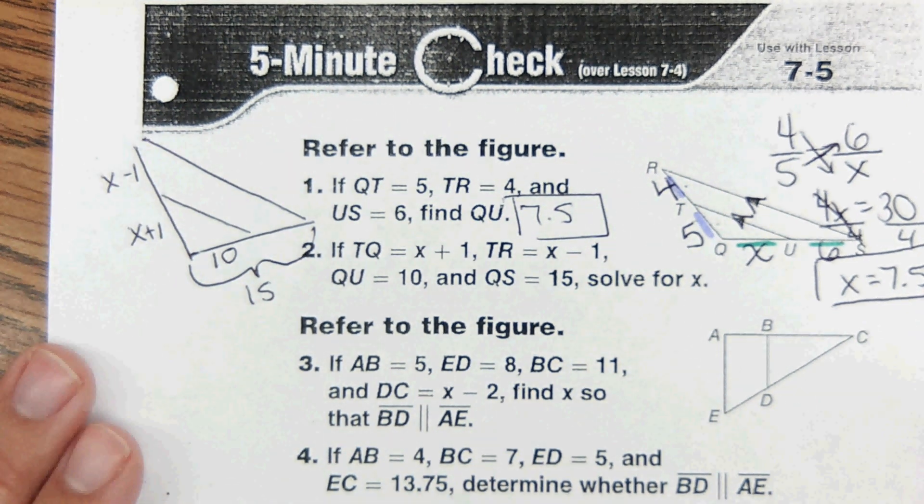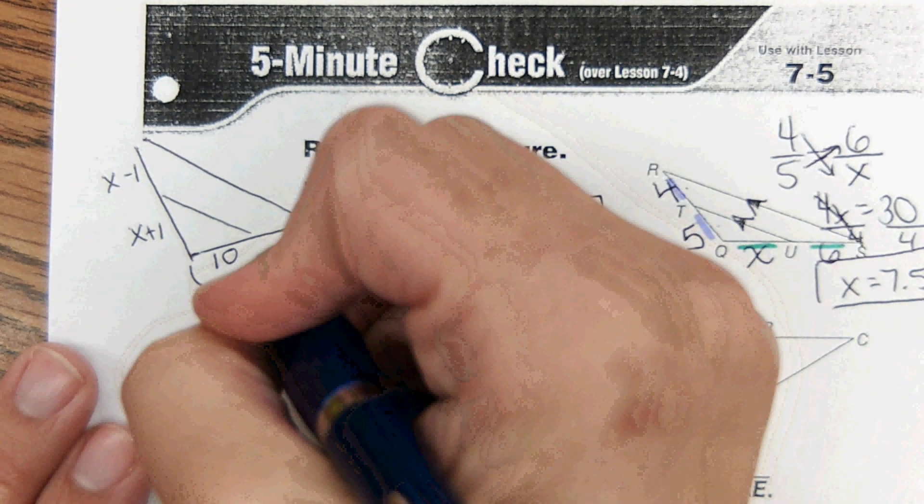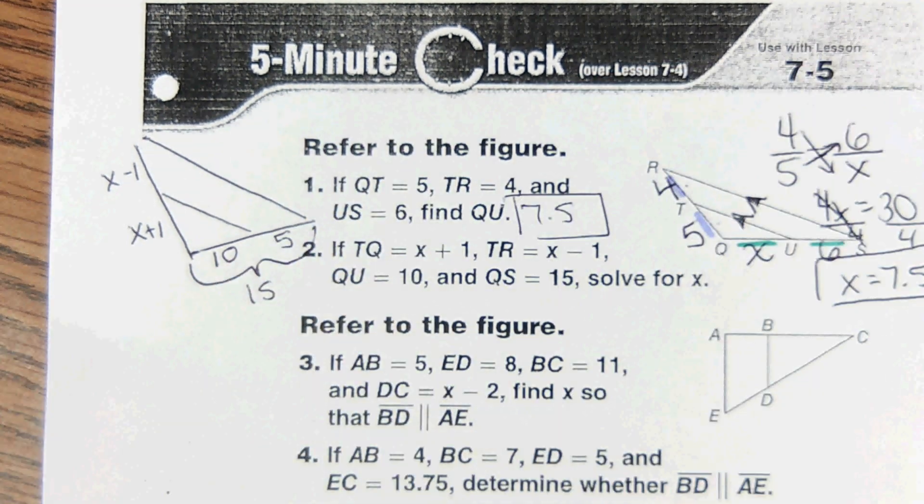QU is 10 and QS the whole thing is 15, so then this segment right here would have to be five.